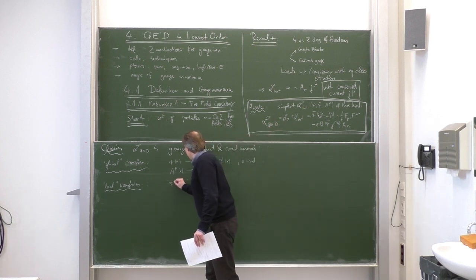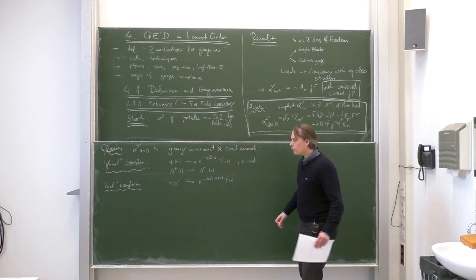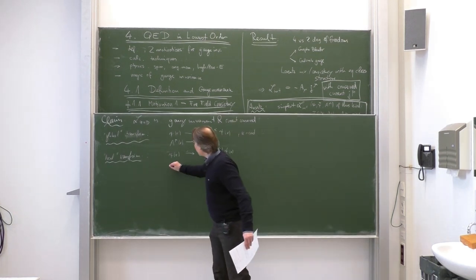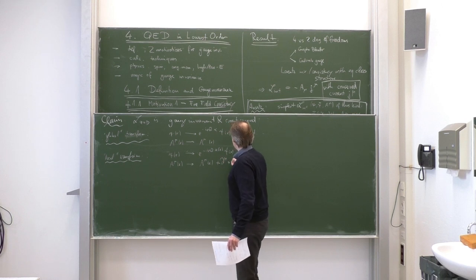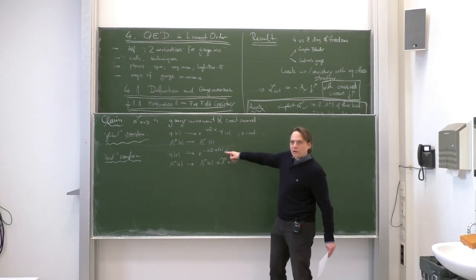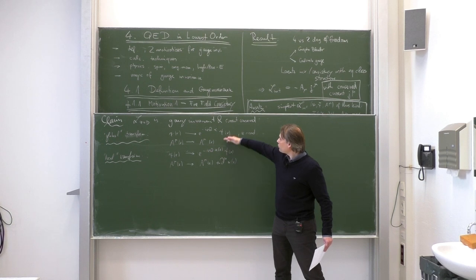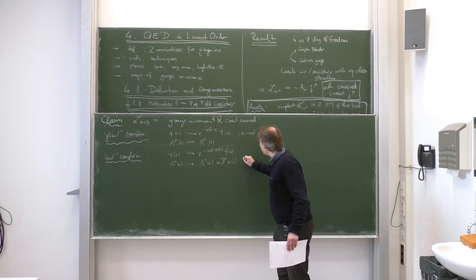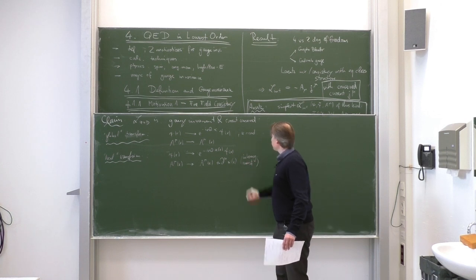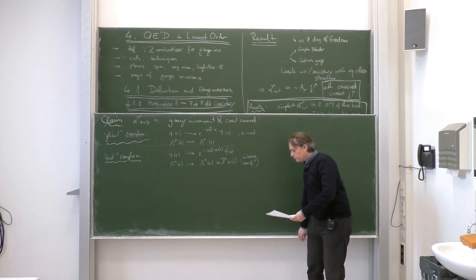In the local transformation, the photon field transforms non-trivially into itself plus D_mu of alpha(x). To highlight the difference: all the transformations except for the last one are homogeneous — on the right-hand side you get something proportional to the left-hand side. But the photon transformation is inhomogeneous — there is a term not proportional to the left-hand side. This is a feature of gauge fields that they have these inhomogeneous gauge transformations. The QED Lagrangian is invariant under both global and local transformations.